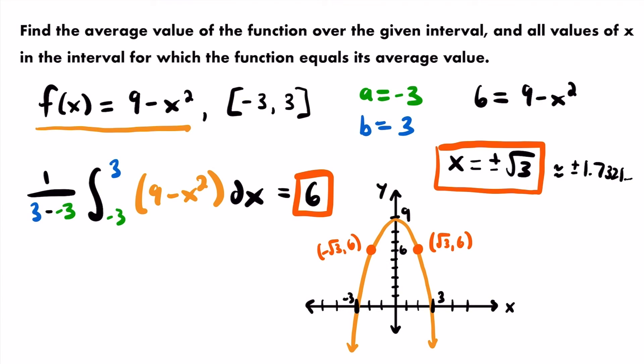Looking at other y values: at x = negative 3 or 3, y is 0. At x = negative 2 or positive 2, y is between 6 and 9. At x = negative 1 or positive 1, y is also between 6 and 9. You can see from these integer values that 6 makes sense as the average value. Essentially, we're finding the area beneath f(x) from negative 3 to 3 and dividing by the width of the interval.